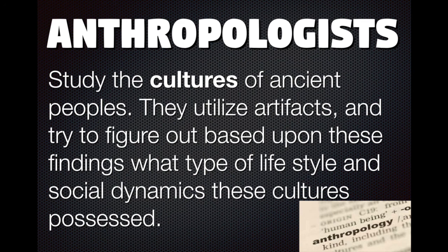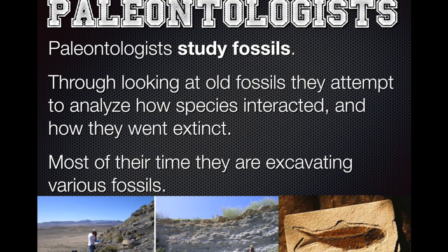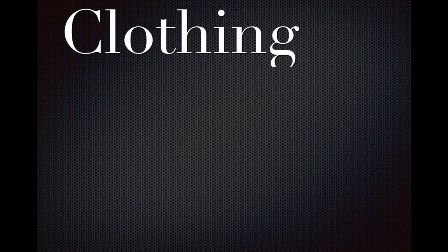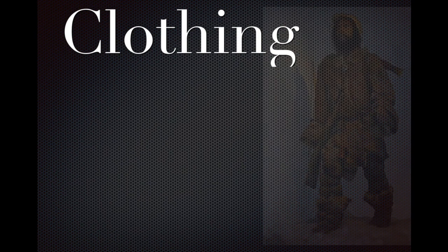Anthropologists study the cultures of ancient peoples. They also use artifacts, but their key focus is the lifestyle people lived — they focus less on the actual artifacts themselves and more on making deductions about ancient cultures. Paleontologists study fossils specifically — they look at the dates of fossils and try to figure out when species existed, which species may have mated, which went extinct and when, and to a certain degree how.